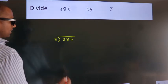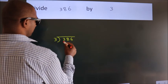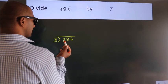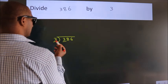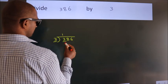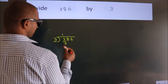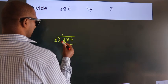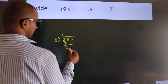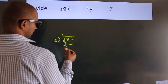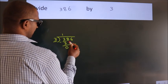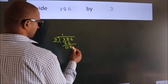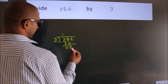Here we have 3, here 3. When do we get 3? In the 3 table, 3 once is 3. Now we should subtract, we get 0. After this, bring down the beside number, so 8 down, so 8.